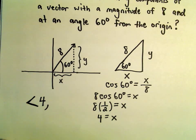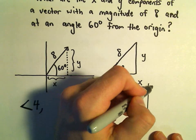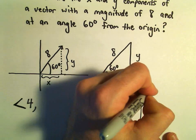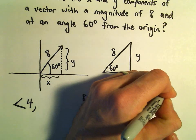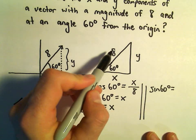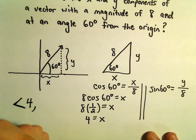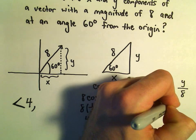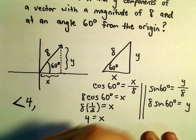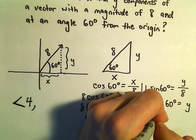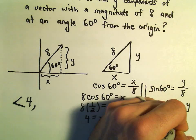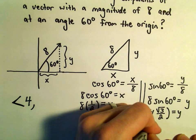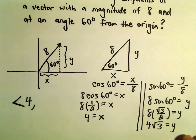We can do the same thing to figure out the y component. Sine of 60 degrees - sine is the opposite over the hypotenuse, so y over 8. Multiply both sides by 8, so we'll get 8 times sine of 60 equals y. Sine of 60 degrees is root 3 over 2. 8 divided by 2 is 4, so we get 4 root 3 as our value for y.